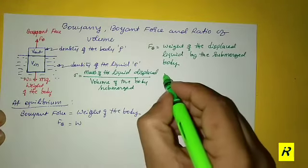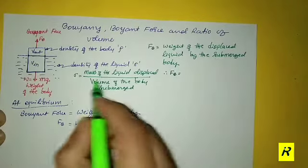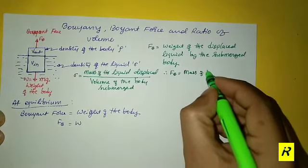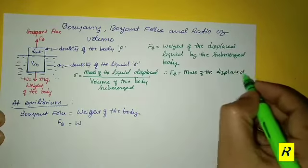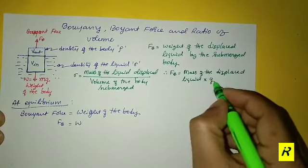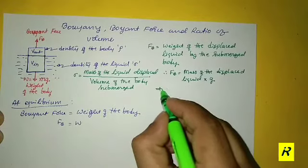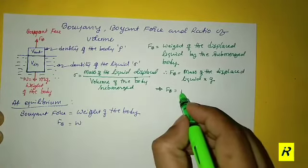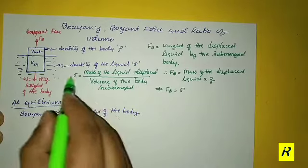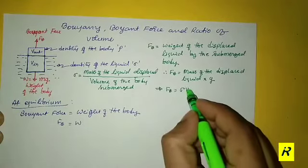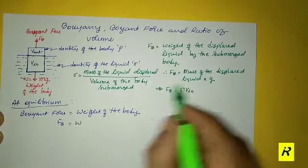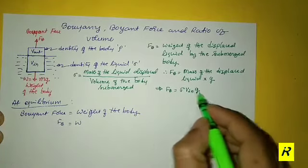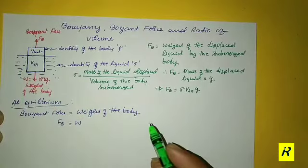The mass of the displaced liquid is density (σ) multiplied by the volume of the submerged body (Vin). Therefore, the buoyant force FB equals the weight of the displaced liquid, which is the mass of the displaced liquid multiplied by G: FB = σ·Vin·G.